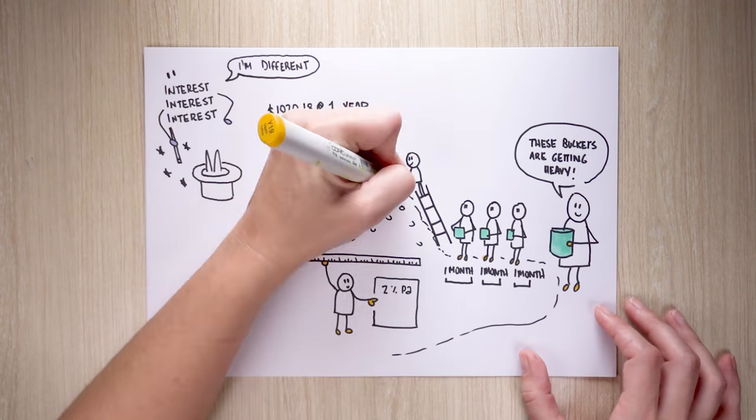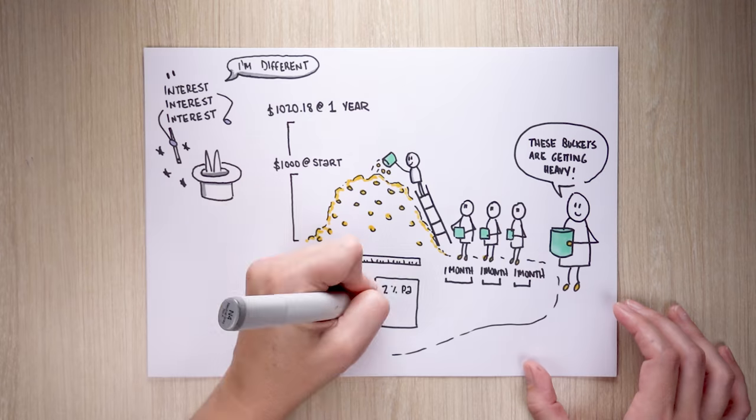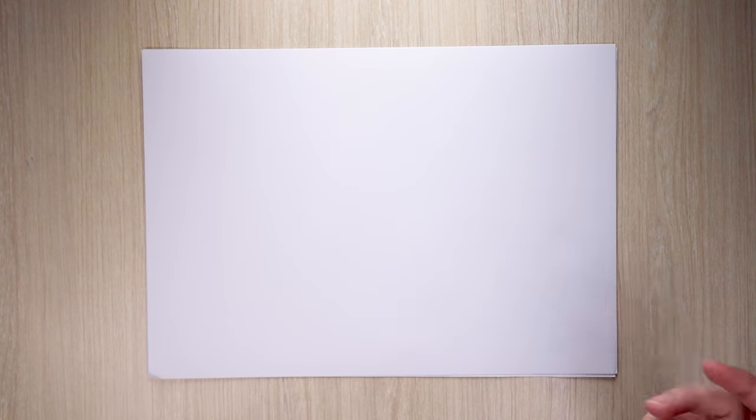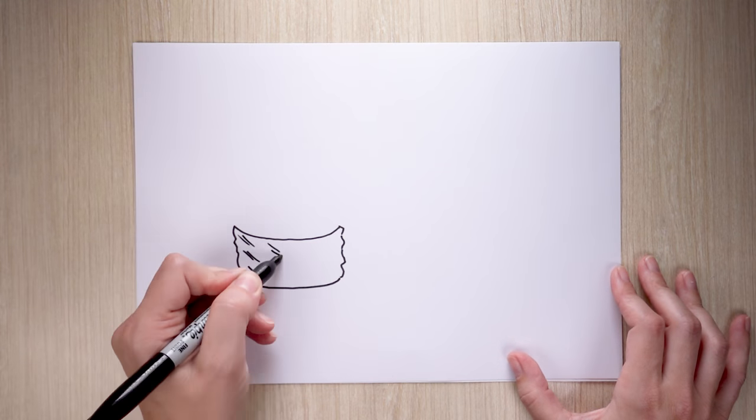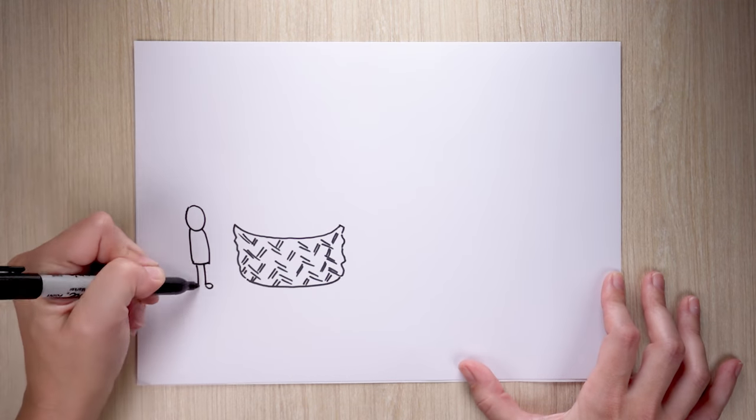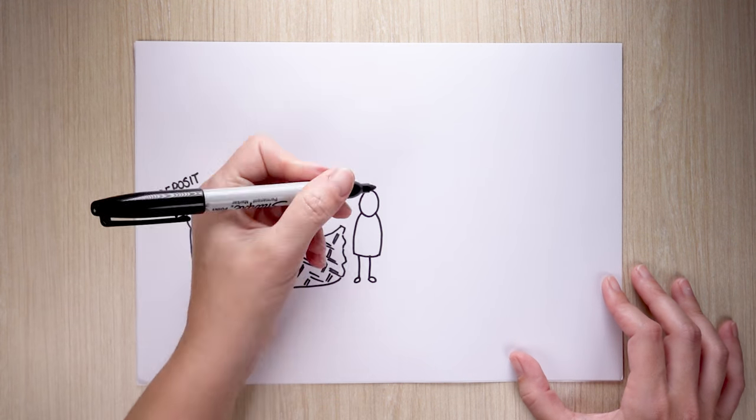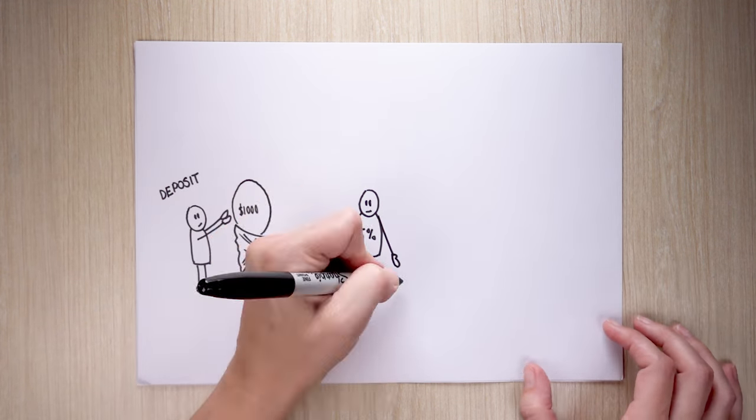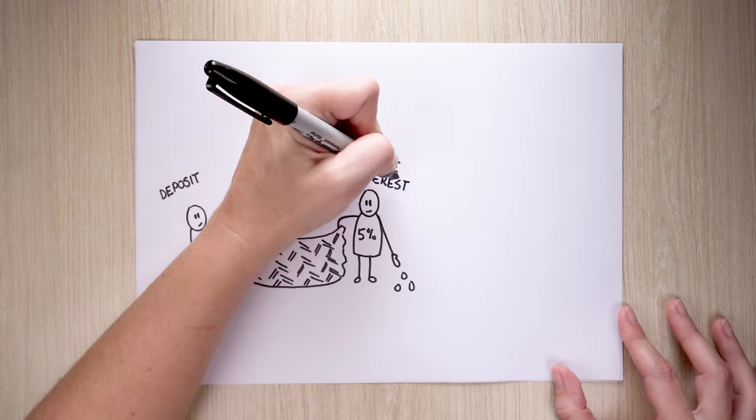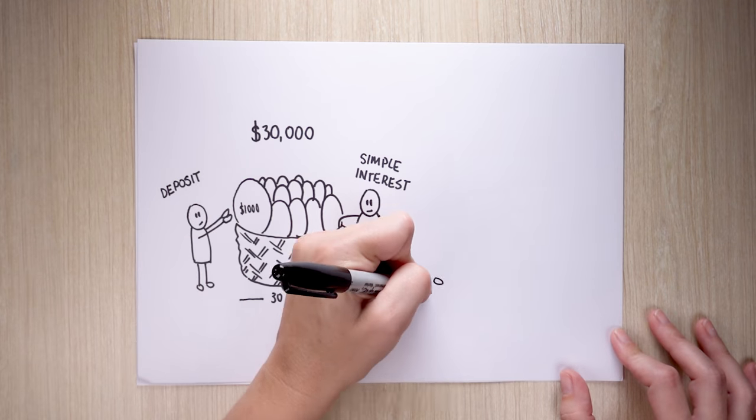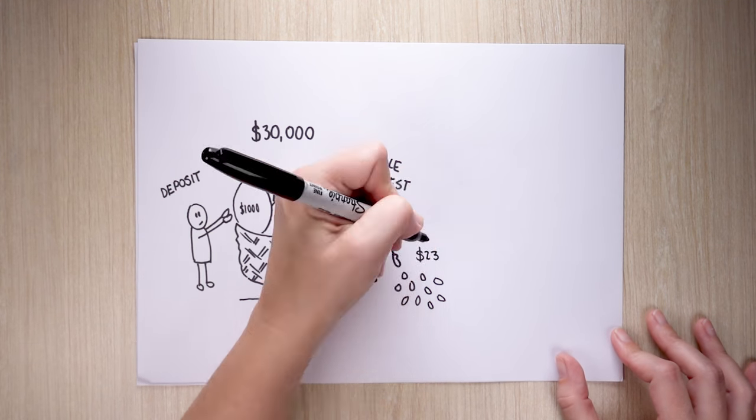The impact is harder to see in the early years, but eventually it becomes quite pronounced. Looking at our examples over a number of years can demonstrate the difference. Let's say you invested $1,000 every year into an account earning 5% simple interest each year, and decided to withdraw the interest at the end of each year. Over 30 years, you would have saved $30,000 and earned $23,250 interest on top of that.